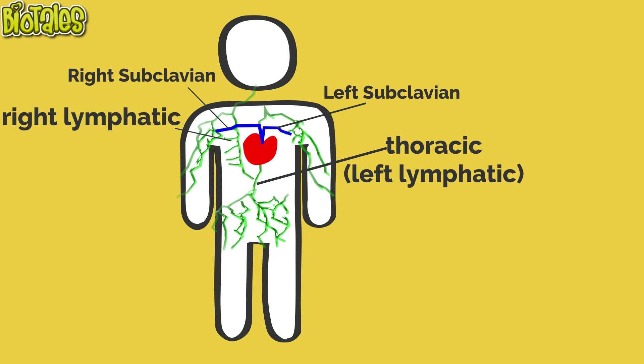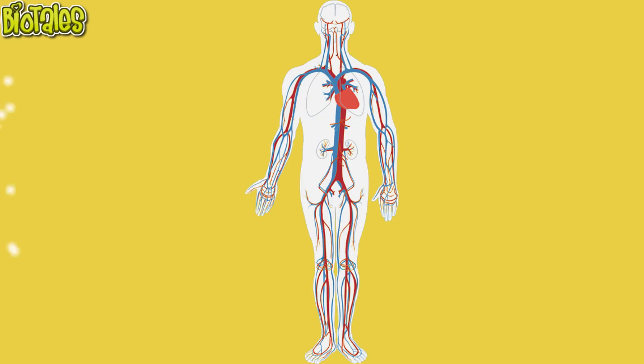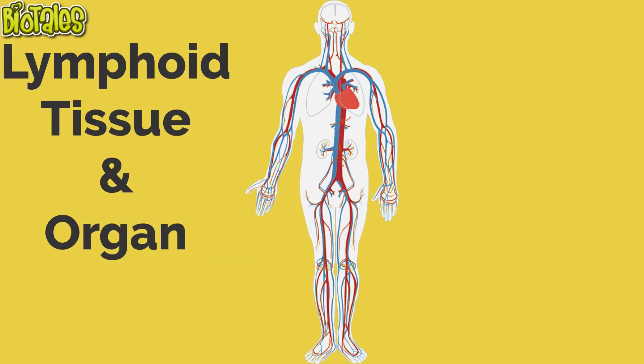Now, this blood plasma moves through the cardiovascular system and ultimately becomes interstitial fluid between tissues and cells, and the cycle begins again. Now, let's see where these lymphatic tissues and organs are located.